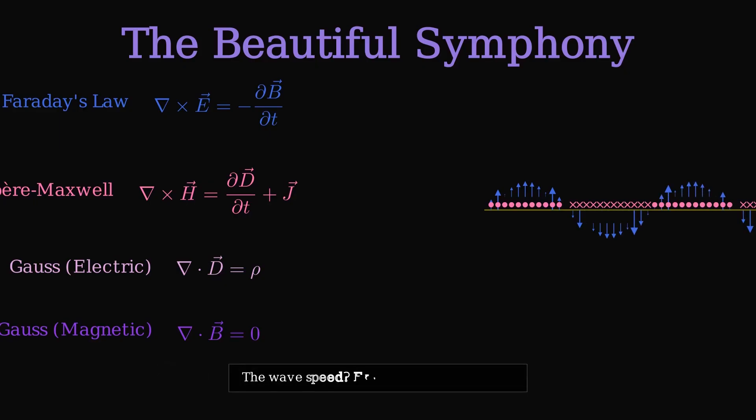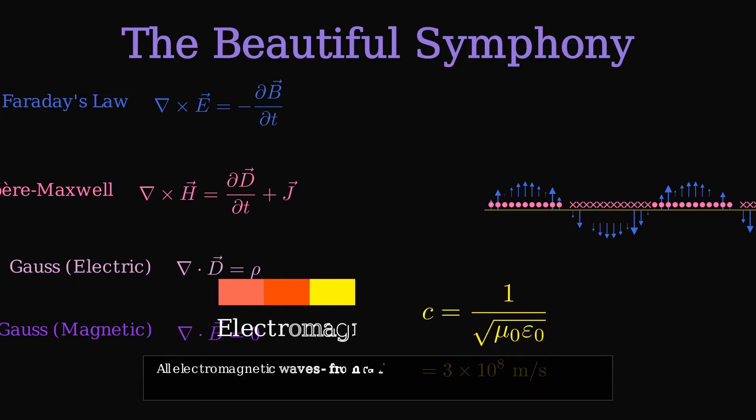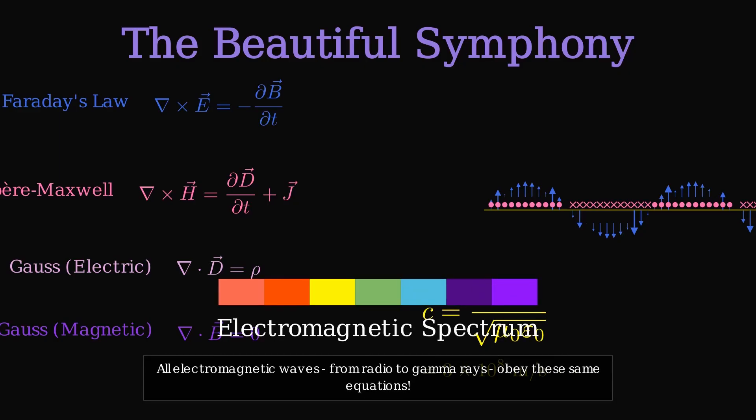The wave speed? Exactly the speed of light. Maxwell's equations predicted that light itself is an electromagnetic wave. All electromagnetic waves, from radio waves to gamma rays, obey these same four equations. The entire electromagnetic spectrum emerges from this mathematical symphony.